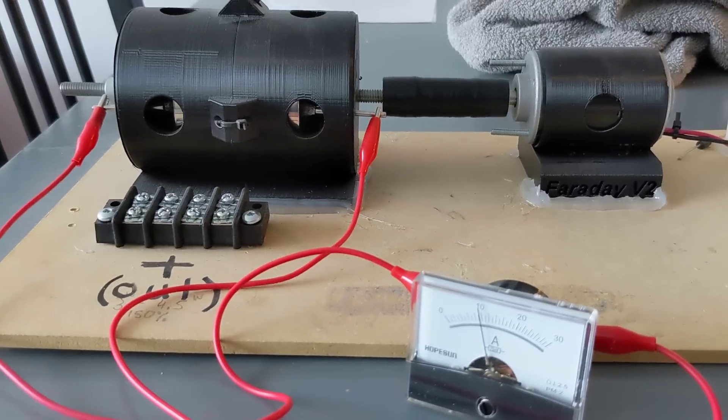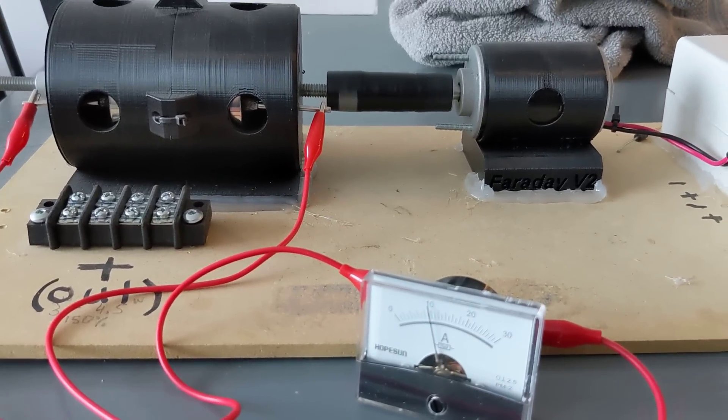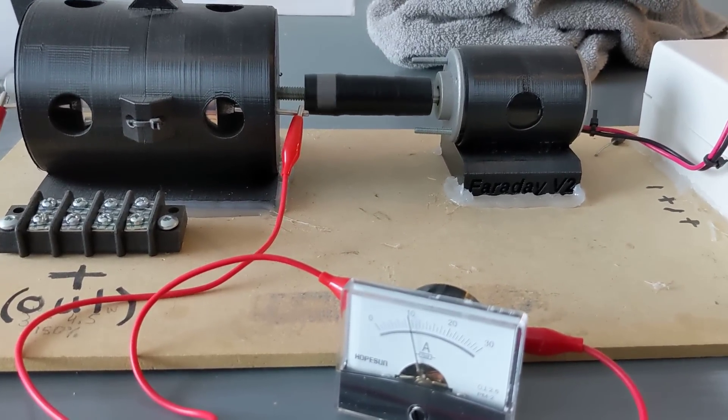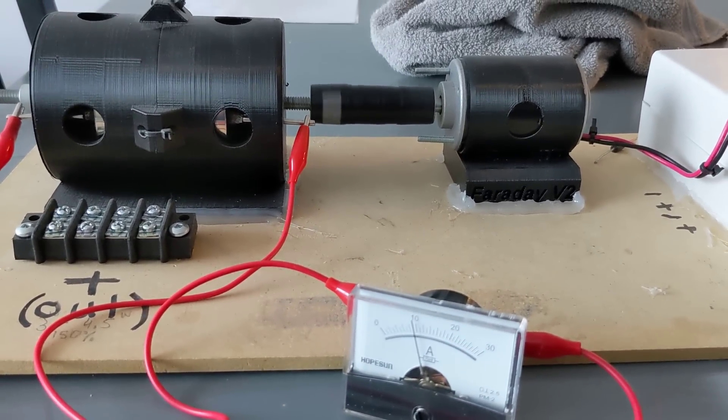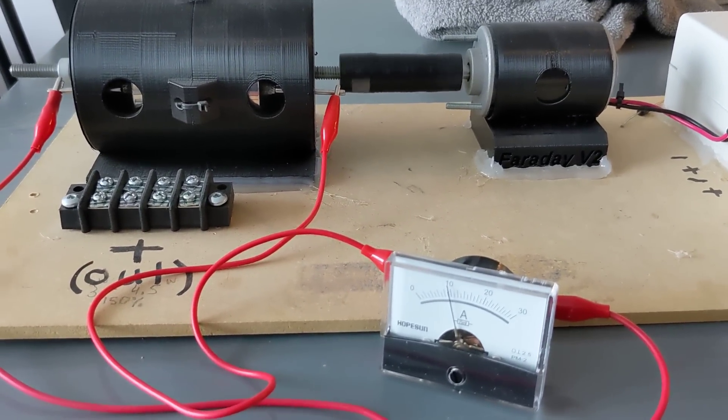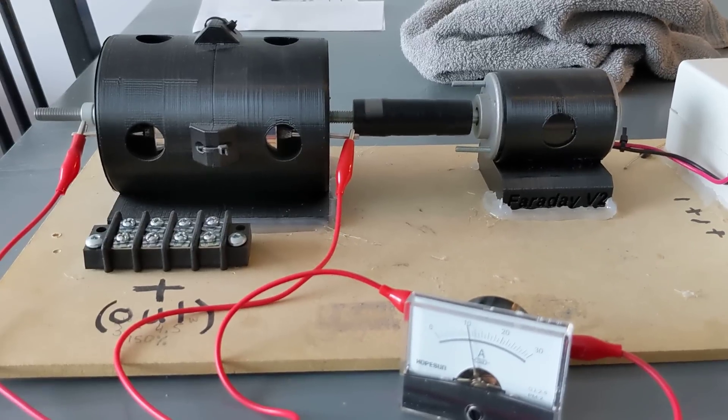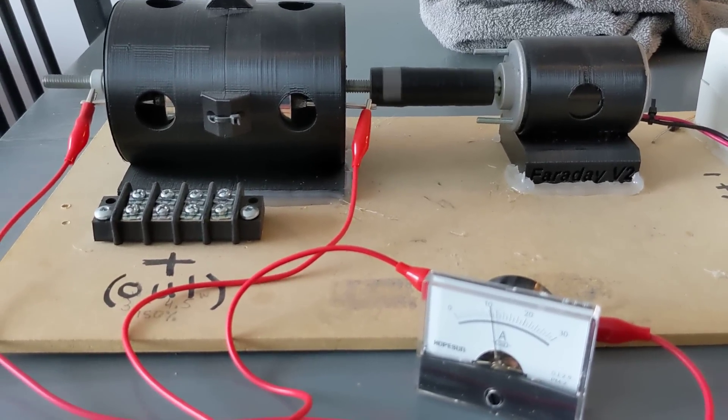See, we're already at 10 amps. And I'm not even pushing it yet. It's only about 800, 900 RPM. There's no power going into this. It's generating that amperage just by spinning magnets. I'm going to go up.